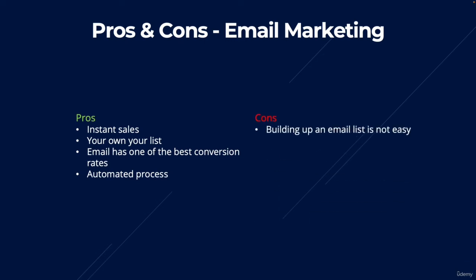What are the cons of email marketing? The first and biggest con is that building an email list is not easy. It involves giving away tons of value upfront and earning people's trust in exchange for their email address. You can't just say 'sign up to my list' and hope people will sign up — you need to provide value first. The second con is that building an email list takes a long time. If you only have 10 people on your list, you won't generate much affiliate revenue. You want at least 1,000 people to see tangible results.